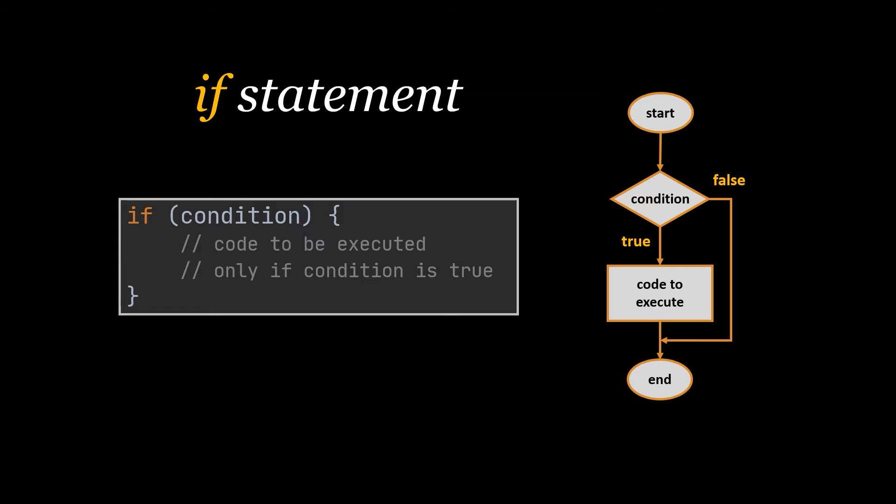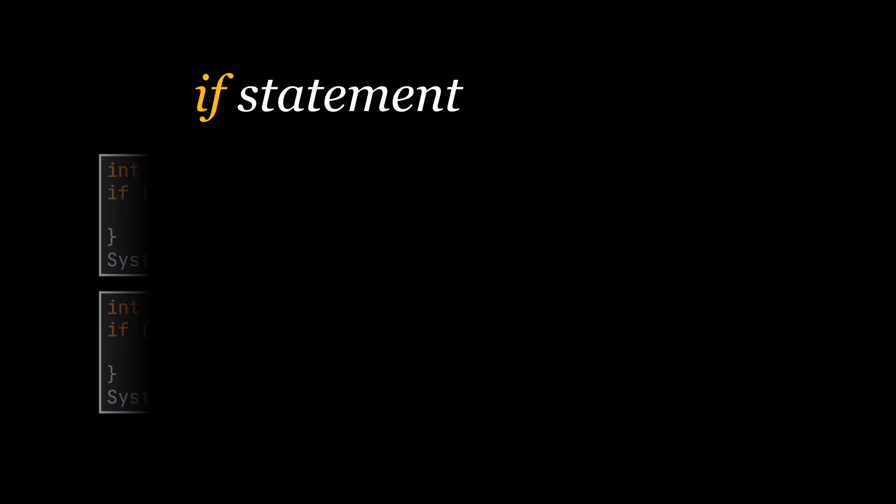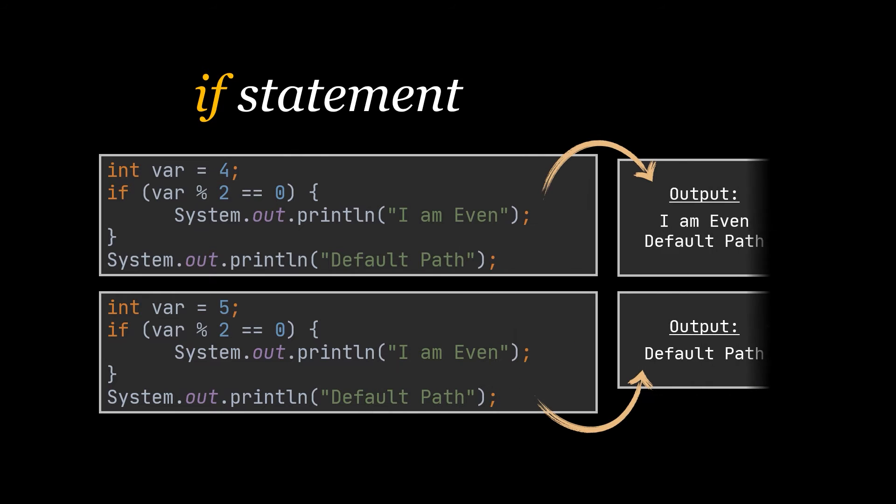Let's see this in action. In this code snippet we are checking inside our if condition whether our variable is an even number. If it is the case, then we print out I am even.